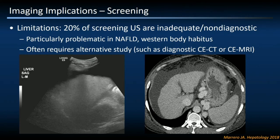Here is one patient from our practice just a few weeks ago. You can see this person has obvious cirrhosis with a nodular hepatic surface contour on their right upper quadrant ultrasound, high echogenicity indicative of underlying fat, and very poor penetration of the sound beam through this fatty liver. You would essentially have a non-diagnostic evaluation of much of the right hepatic lobe.